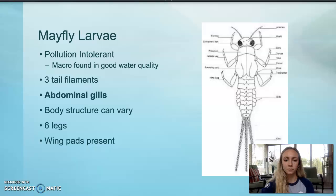A mayfly's body structure can vary quite a bit, but some things that don't change are their three tail filaments, the abdominal gills, three segmented legs so they have six legs total, and the wing pads present on their back.